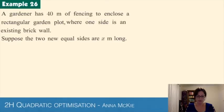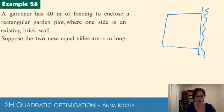An example here: A gardener has 40 meters of fencing to enclose a rectangular garden plot. Picture what shape that's going to be - rectangular - where one side is an existing brick wall. If you have a brick wall that's fixed, we need rectangular fencing to enclose that, and the total length of all that fencing is going to be 40 meters.